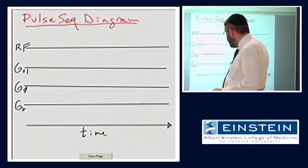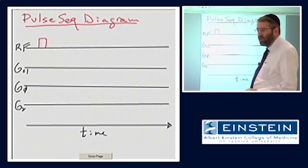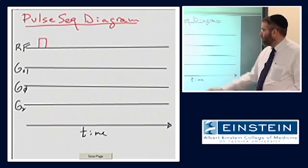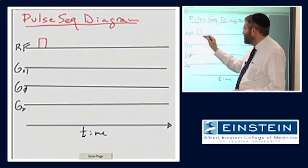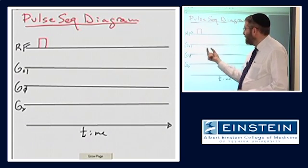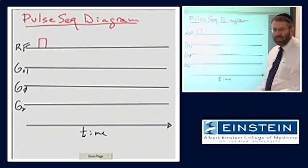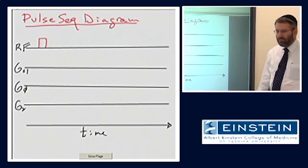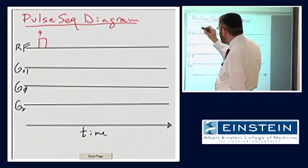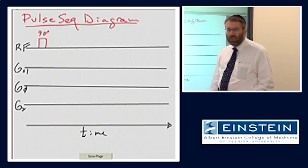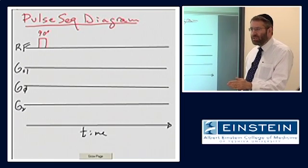So the first of those is that we have to turn on our RF. And these sort of little boxes or oval symbols are representing the duration of time that we turn this item on for. And its height is telling us the amplitude at which we turn it on. So this little box is designed to represent what it takes to generate a 90 degree rotation of the longitudinal magnetization to the transverse plane.